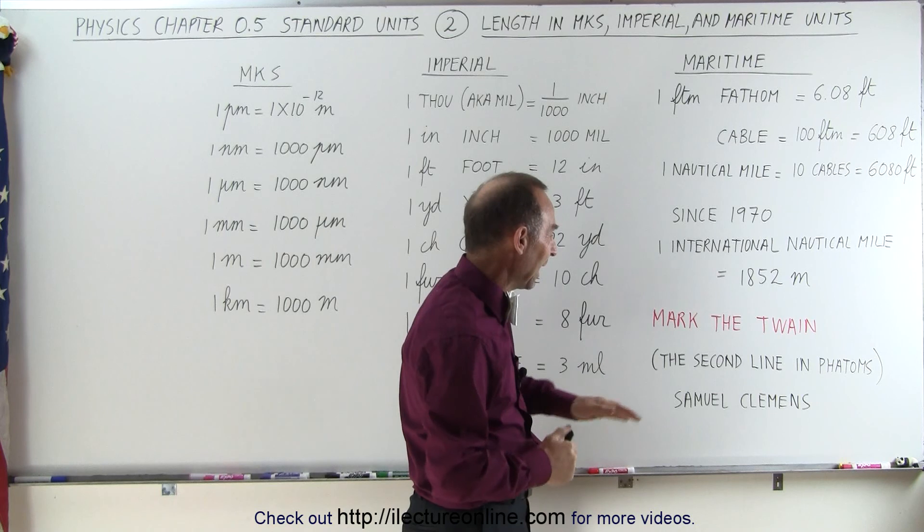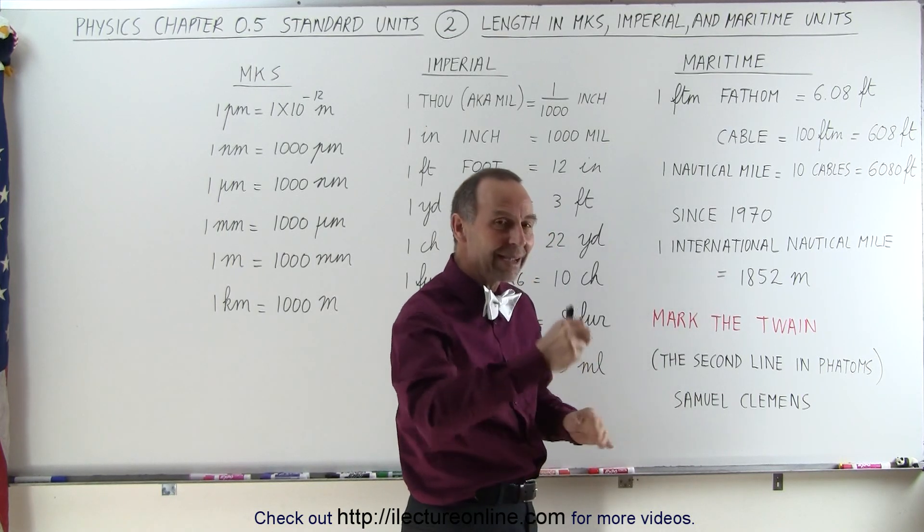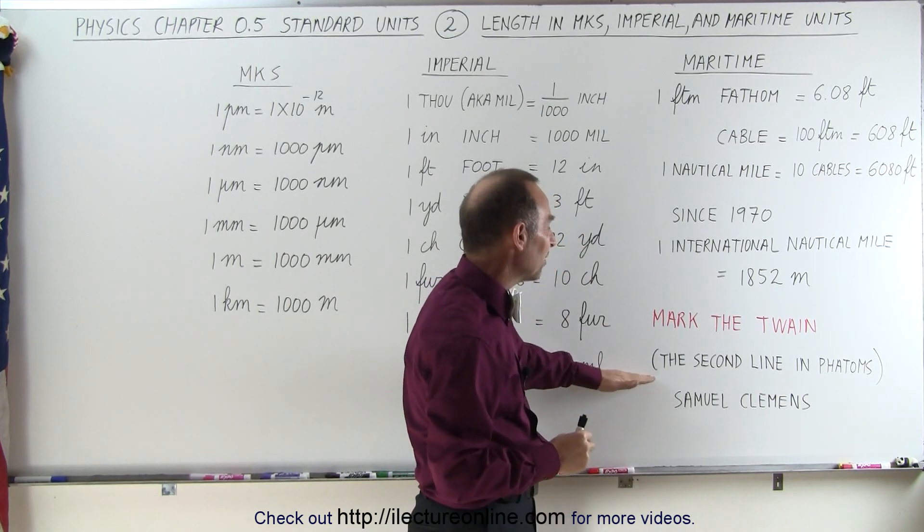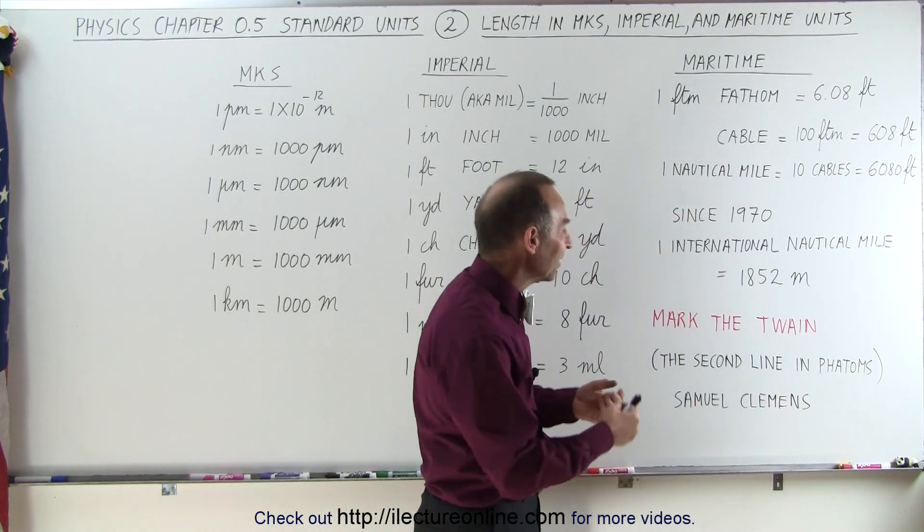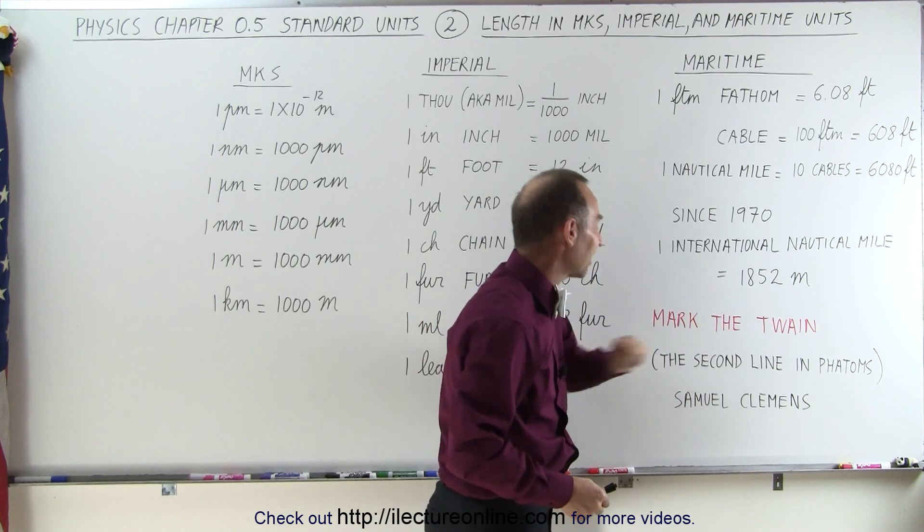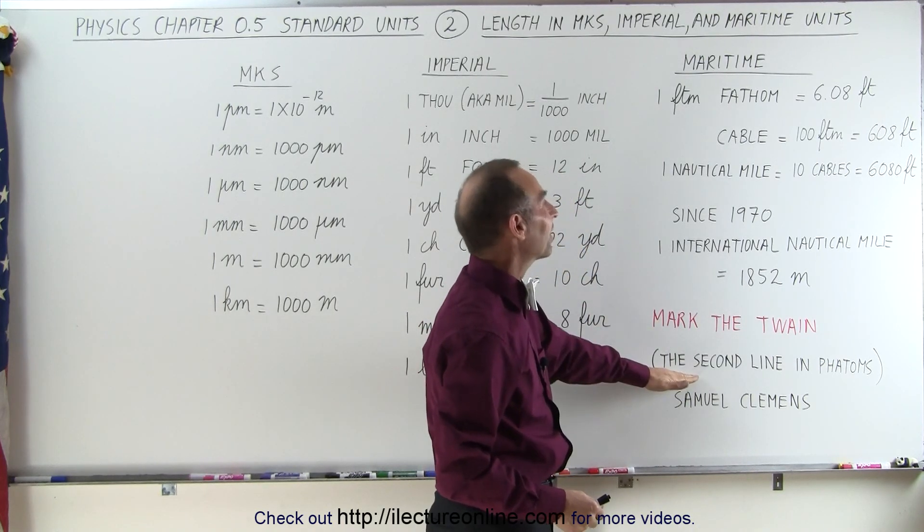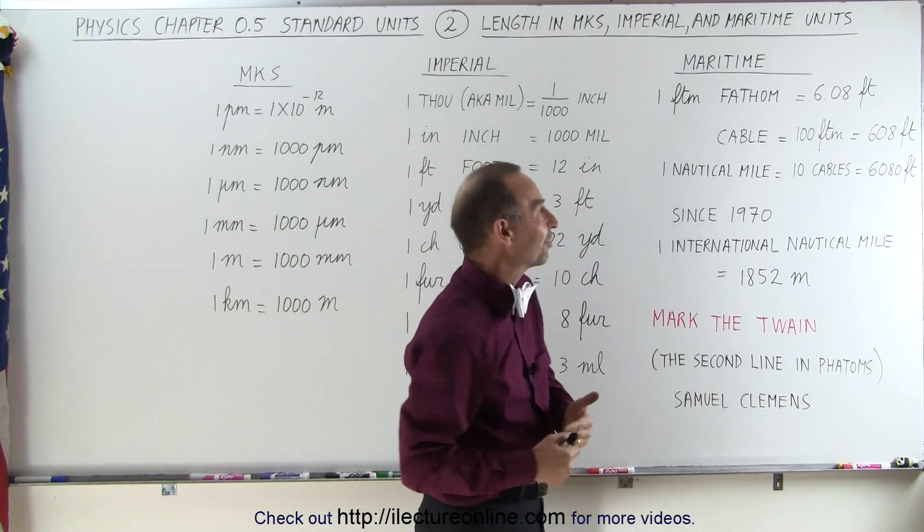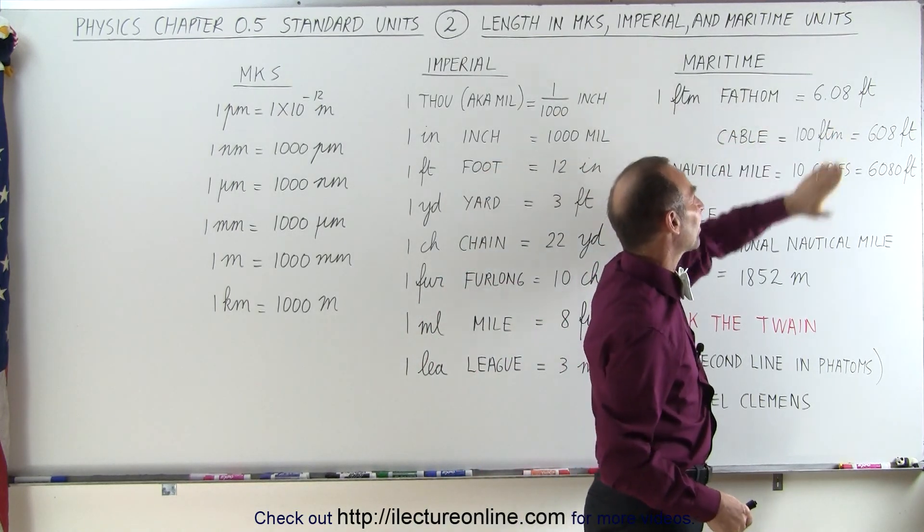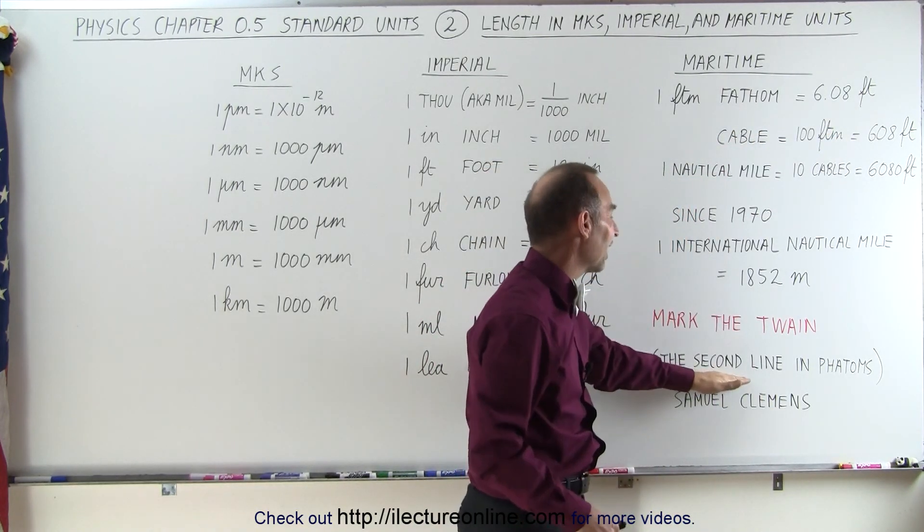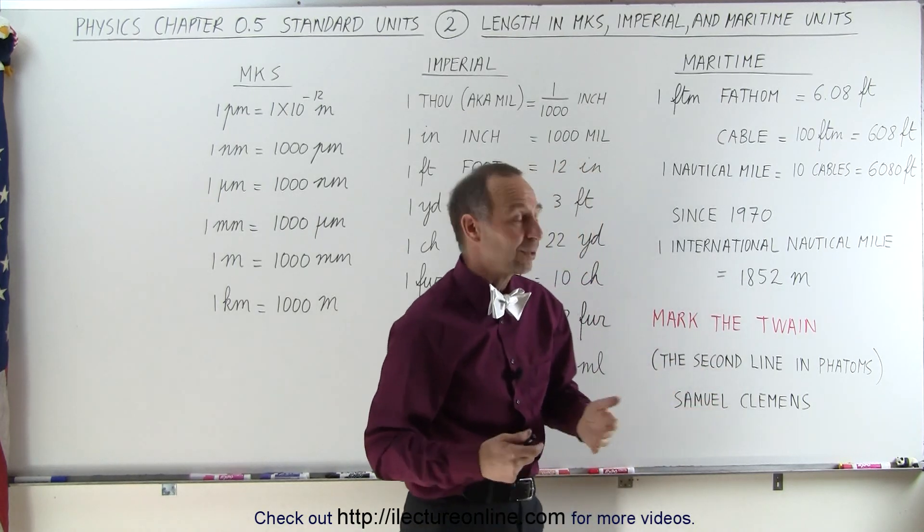They would mark the line that they put down into water to measure the depth, and the second line measured in fathoms was the twain—the second line, twain meaning the second line, meaning it was two fathoms deep, which was safe for river travel. So notice that one fathom was about six feet, that means the second line was about 12 feet down, and that's what they were looking for.